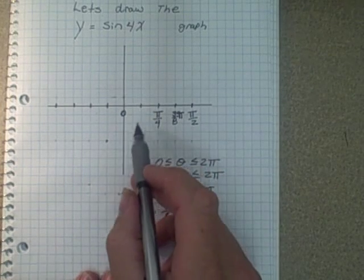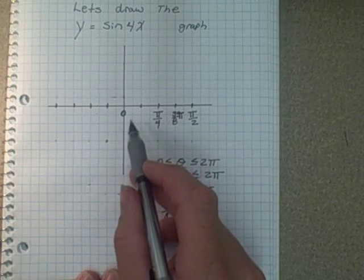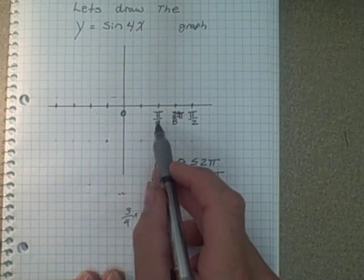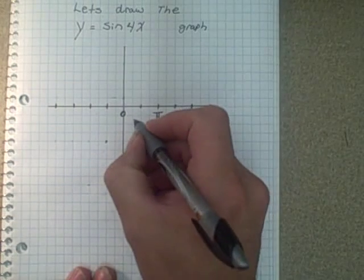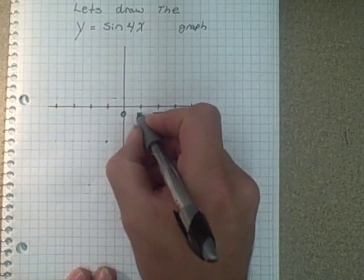Same thing with this one here. Between here and here. 0 plus 1 quarter is 1 quarter divided by 2, which is 1 eighth pi. Pi over 8.